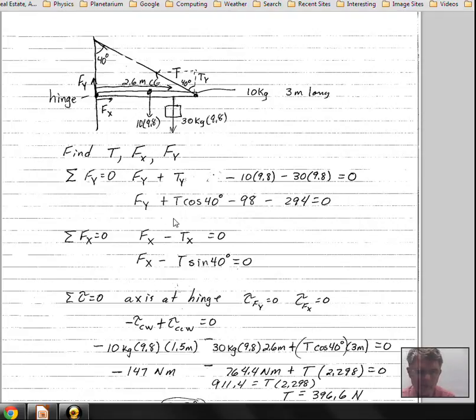So F of X minus T sine 40 degrees. Again, the 40 degrees right here. We want to know this T sub X quantity, so we use the sine function to accomplish that.